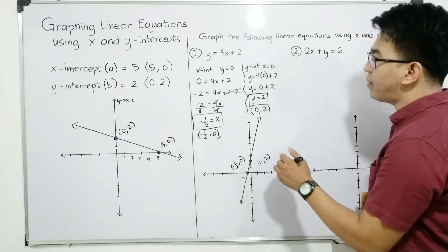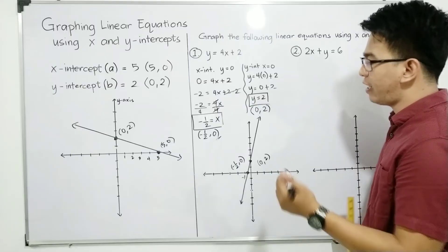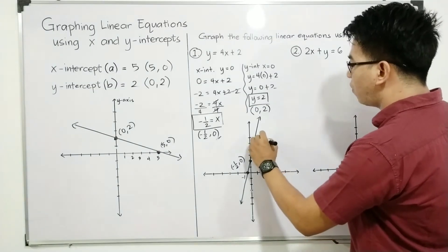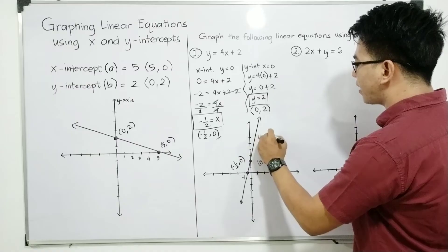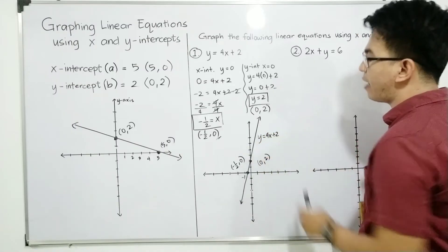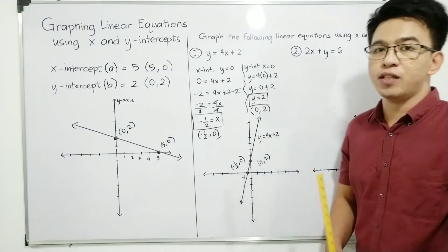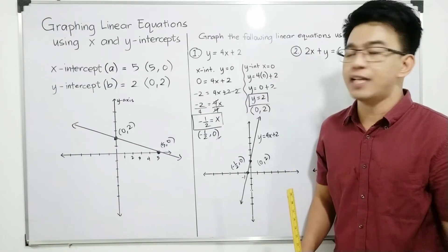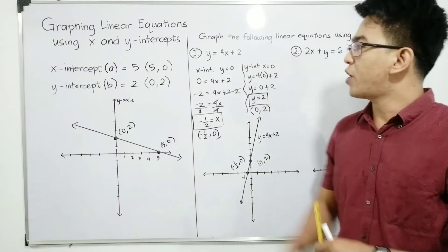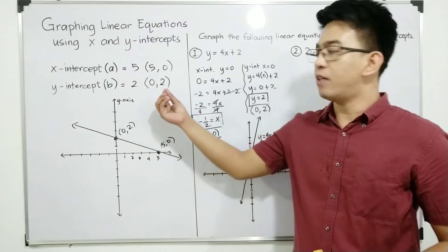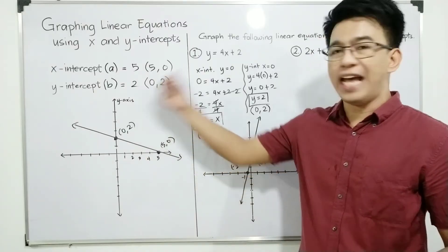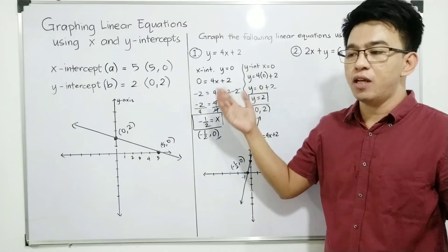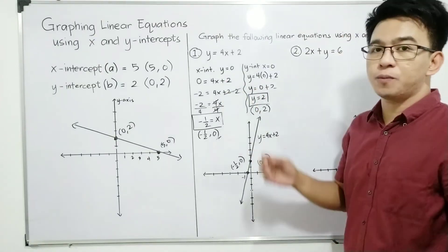We can now put the label — the label is important to avoid confusion. So we have y = 4x + 2. This is the graph of that equation. I hope you learned something from the first example and the second example. Now let's move on with item number 2.